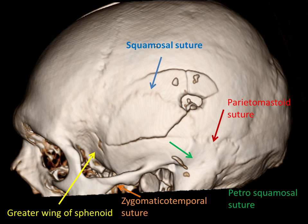It's important to be able to distinguish between fractures and sutures. Sutures often have very wavy, irregular borders; fractures are usually straight. It is important to know where the normal sutures are. In this patient with a gunshot wound to the head, there are fractures, but in addition you can make out the different sutures: the squamosal suture, parietomastoid suture, petrosquamosal suture, and the zygomaticotemporal suture. This area here, just for reference, is the greater wing of the sphenoid.